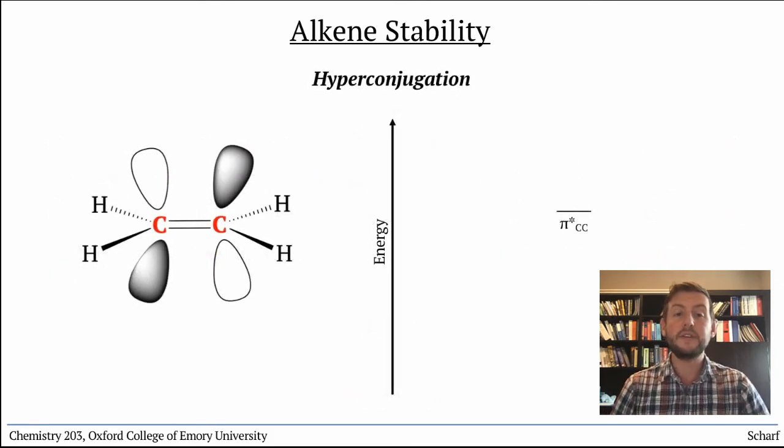Alkenes have unfilled relatively low energy pi-star orbitals. We've said that they're not great acceptor orbitals in chemical reactions, and that's true, but they're still there.